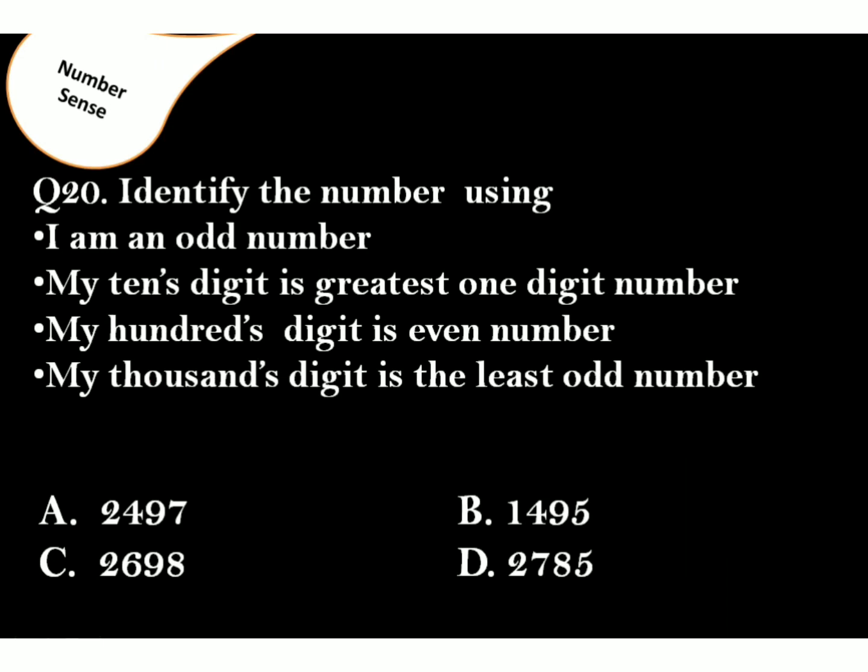Question 20. Identify the number using: I am an odd number. My tens digit is greatest one digit number. My hundreds digit is even number. My thousands digit is the least odd number. The correct answer is option B. As it is an odd number, it has 9 at tens place. Its hundreds digit is even number. And its thousands digit is the least odd number, that is 1.